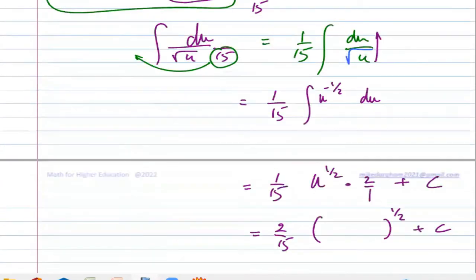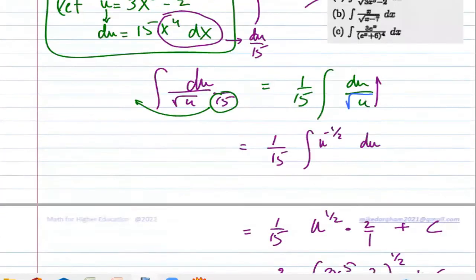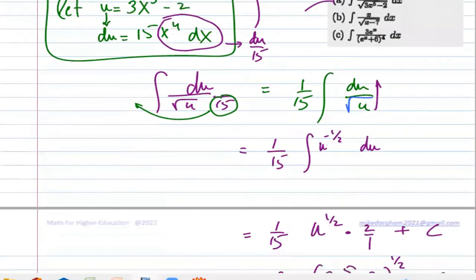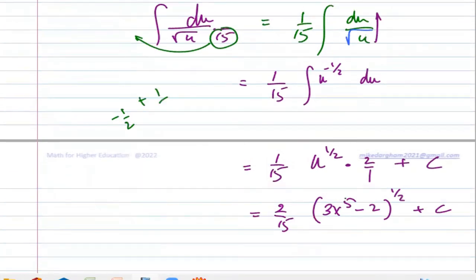Negative one half plus one is one half. We add a one—the rule says add a one. If that is a five it comes to six, but it is a minus half. Minus half add a one, you get half back. And the two comes from when you integrate you should divide by half, but dividing by half is not accepted by teachers—you should simplify it more.